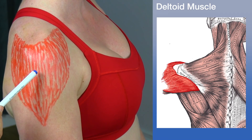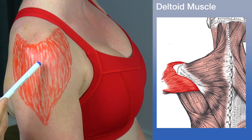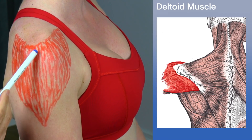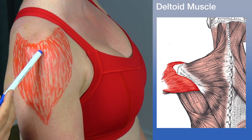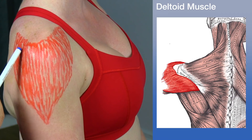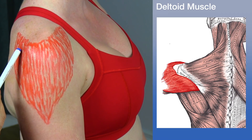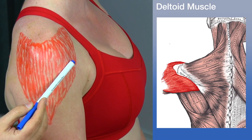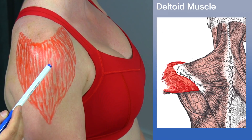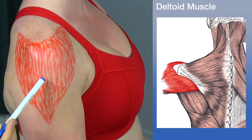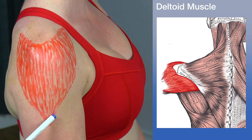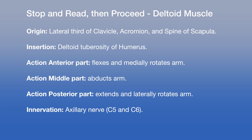The deltoid is a superficial muscle that gives the shoulder its characteristic shape. It consists of three groups of fibers: the middle fibers attach to the lateral border of the acromion, the posterior fibers attach to the spine of the scapula at the inferior portion of its posterior border, and the anterior fibers attach to the clavicle around the lateral third. All three groups converge and insert on the lateral surface of the humerus.